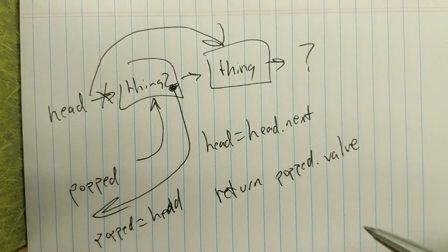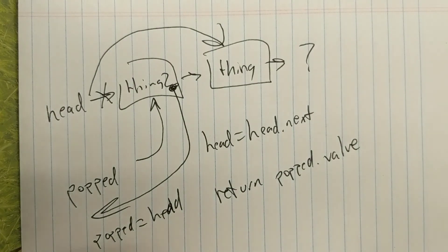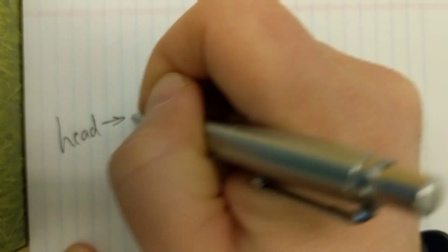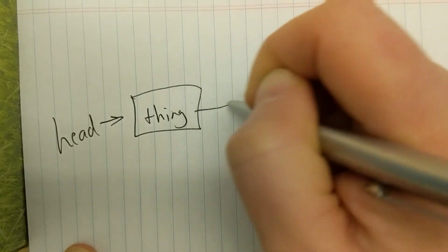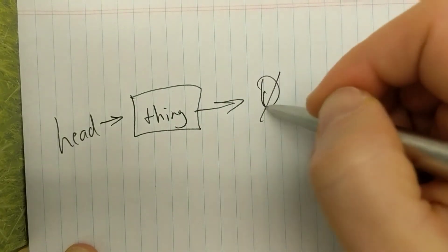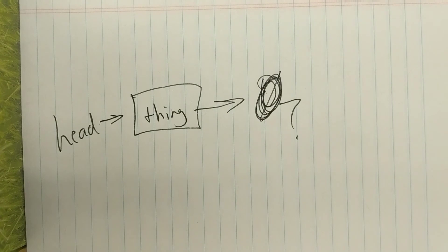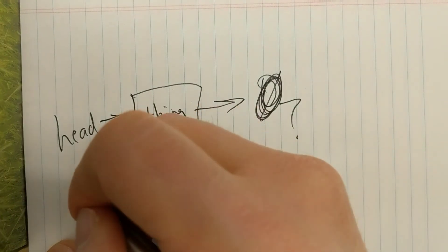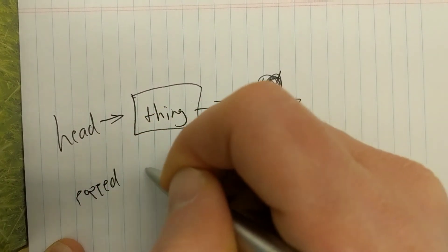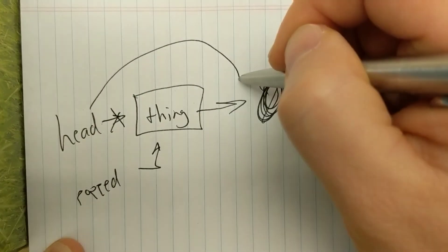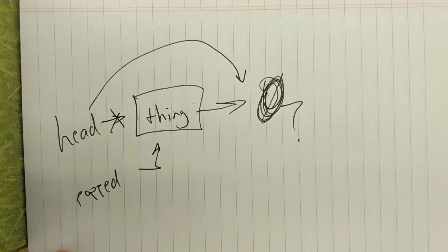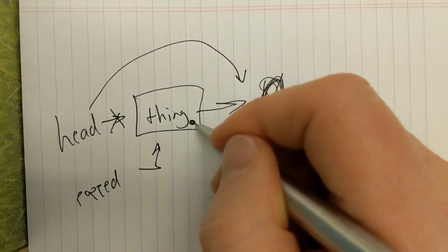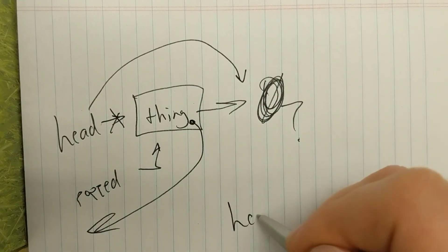We send the popped value back as a return value. We end up with head pointing to the node containing thing, which points to whatever was below it. If we pop again, we create popped, set it equal to head, set head equal to head dot next — which is now the question mark — and return thing. Head is back to its original state.